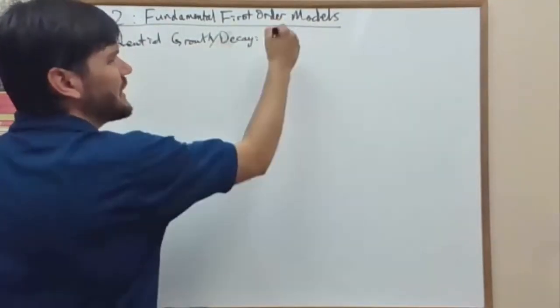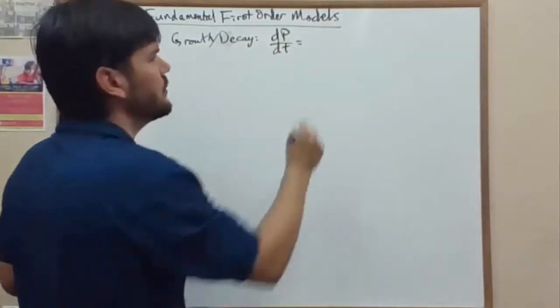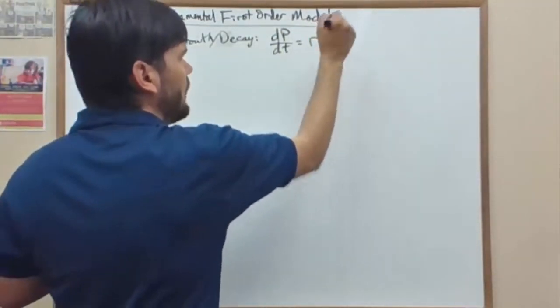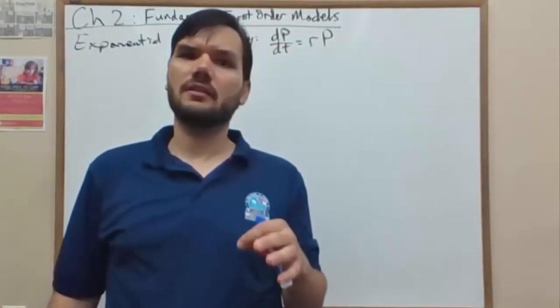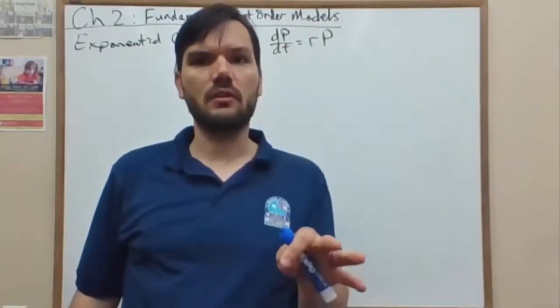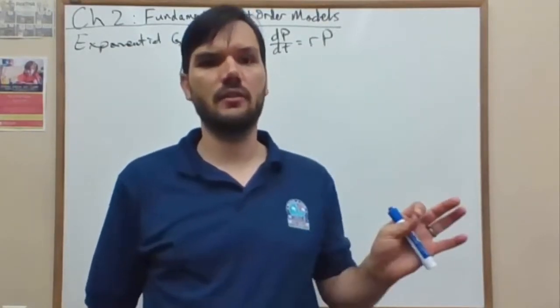I want to start off with probably the most important, most famous one, and that is the exponential model for growth or decay. We think of this as a population, then we relate the change in that population to some multiple of the population, which says that if the population is small, it grows slowly. If the population is large, it grows faster.